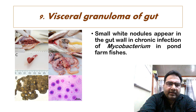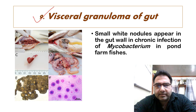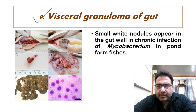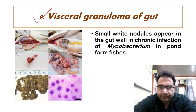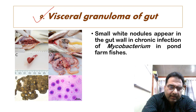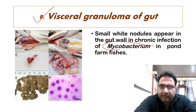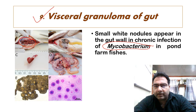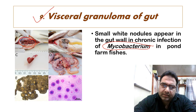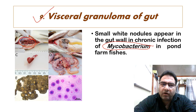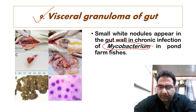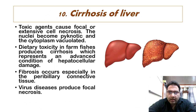Then there is visceral granuloma of the gut. Small white nodules appear in the gut in chronic infection by Mycobacterium in farmed fishes. If these small white nodules are seen, it generally indicates infection by Mycobacterium, and we call this visceral granuloma of the gut.